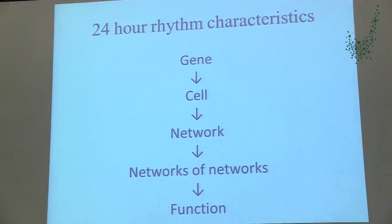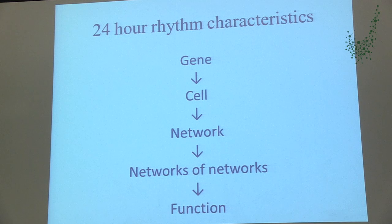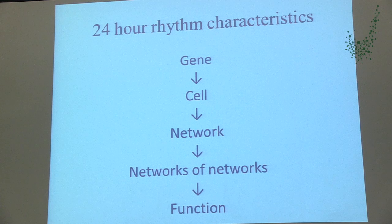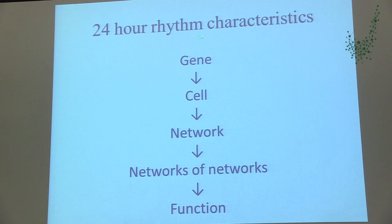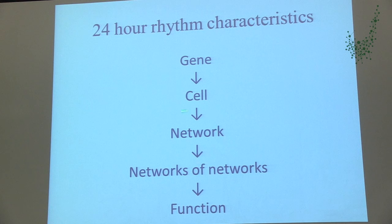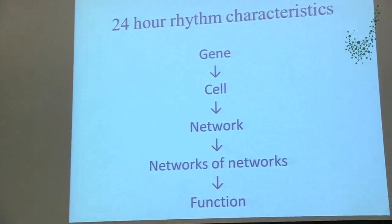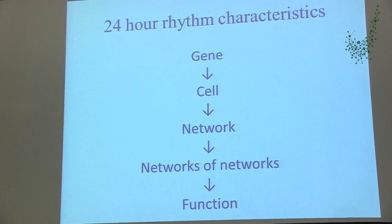So far this has been a black-box analysis indicating some basic attributes of this biological — or circadian — system. 'Circadian' comes from 'circa dies,' meaning 'about a day.' Now I want to go into the system and ask at what level of organization the different attributes are formed. The usual scheme is to think from the lowest level — the gene — up through cells, networks, and networks of networks, to the function you observe through behavior or measurements from an animal.